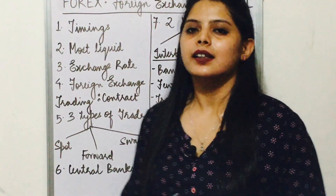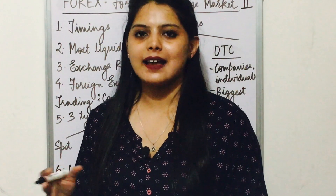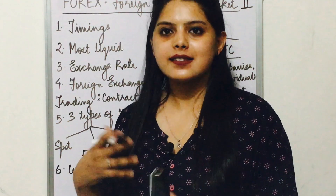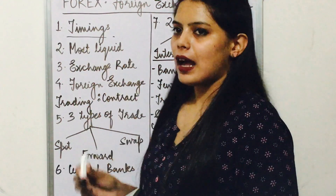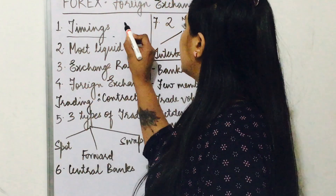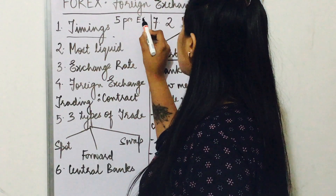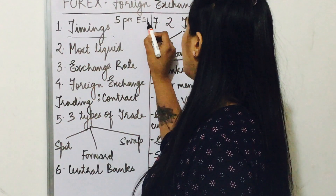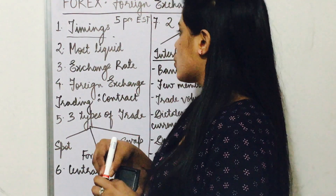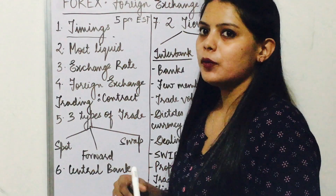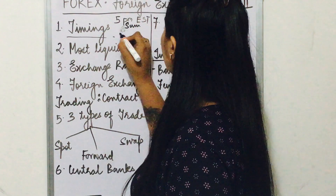First is timings. The foreign exchange market works on a 24-hour basis, as there is participation from various countries with different standard timings. The timings are actually 24 hours except on weekends. It starts from 5 PM according to Eastern Standard Time on Sunday and ends at 4 PM Eastern Standard Time on Friday.